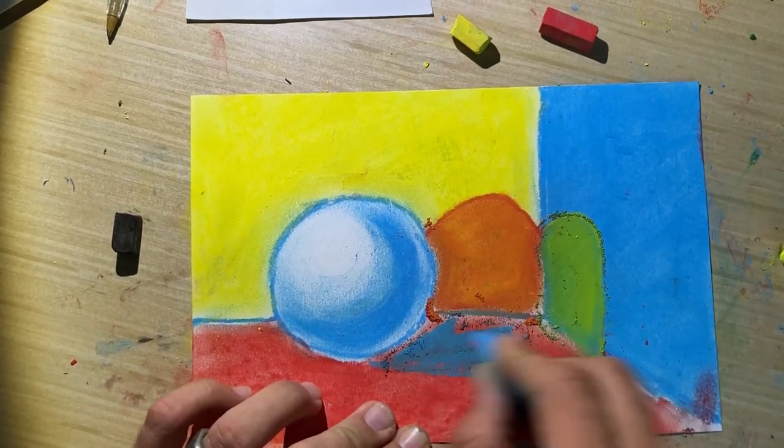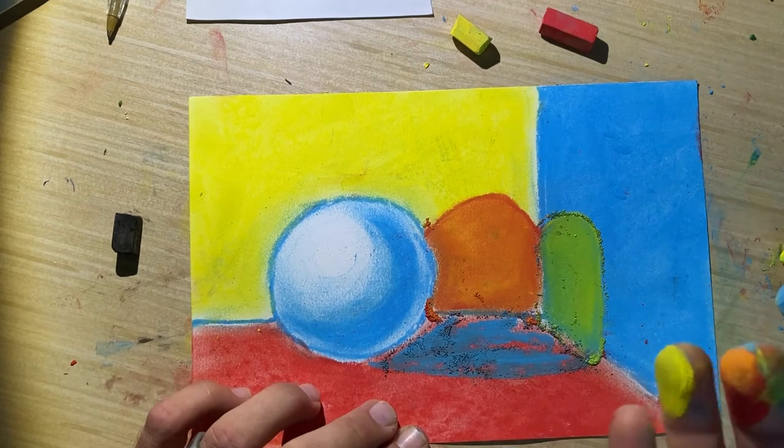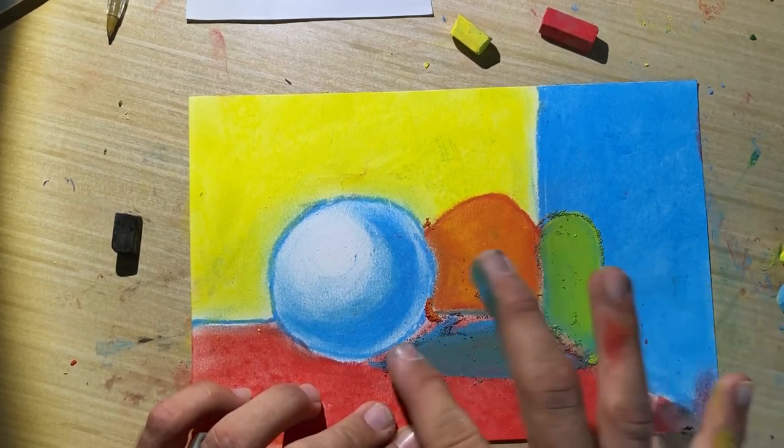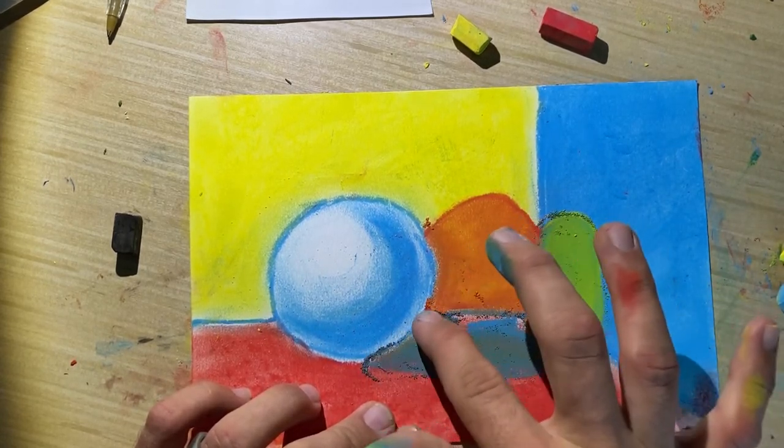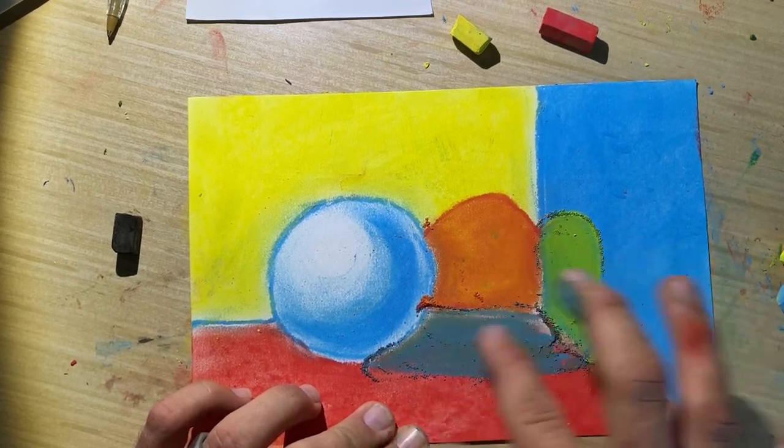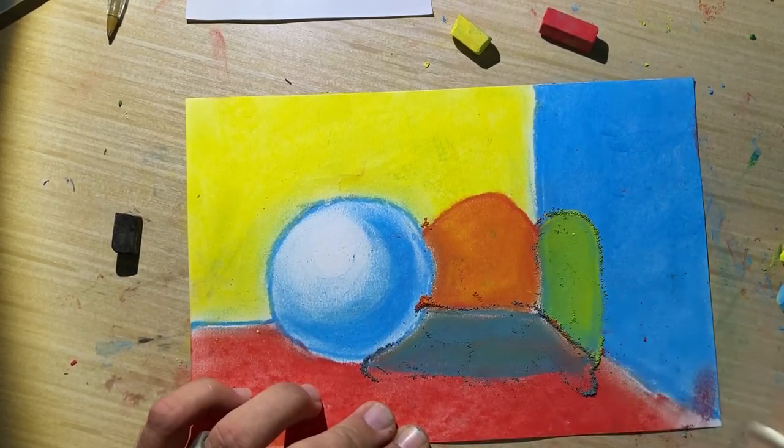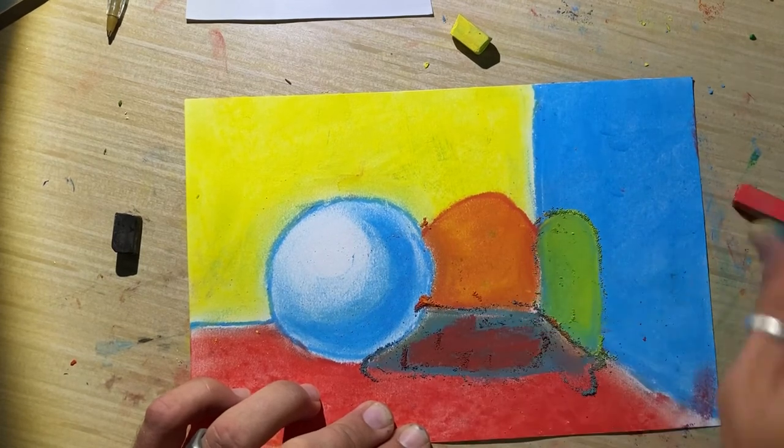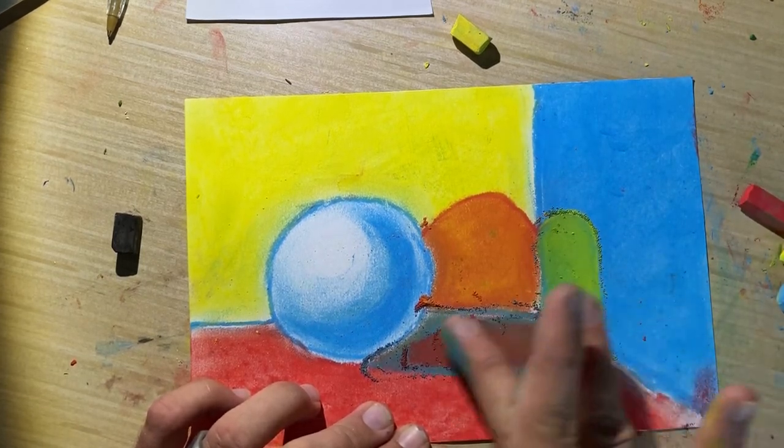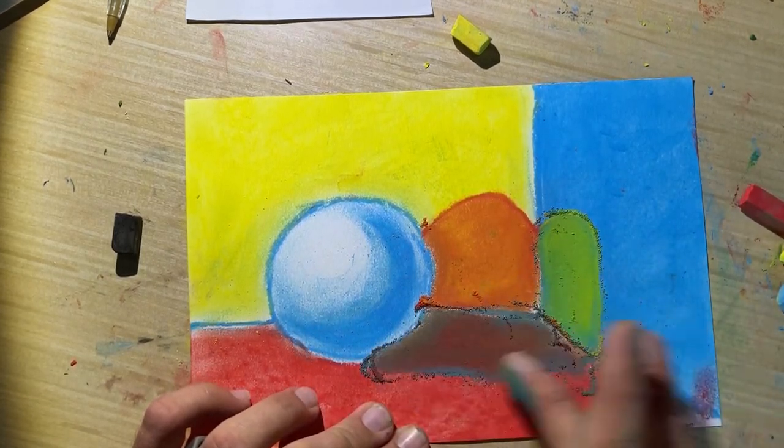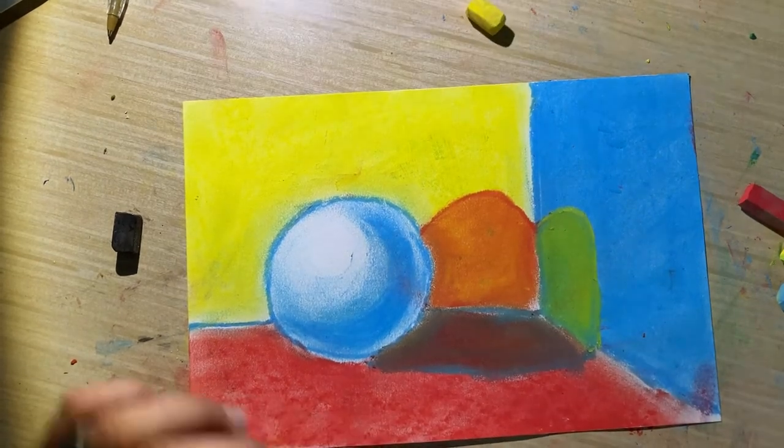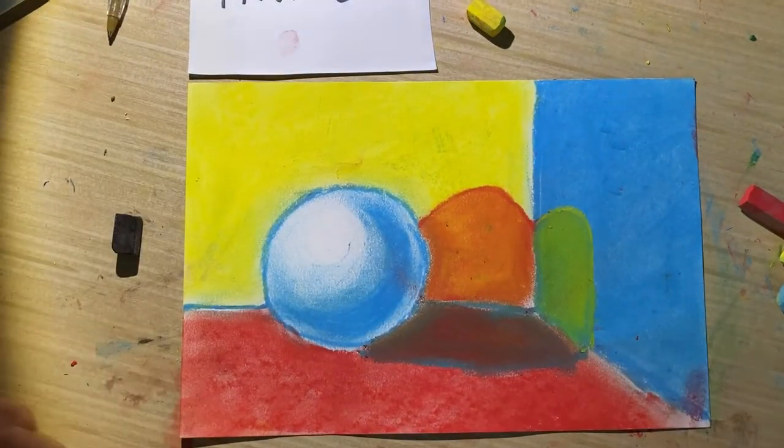And then down here on the red floor, I'm going to throw in my blue. It's going to end up a little brown because I got a little yellow on my finger. That's okay. I want this to be a little more purpley. So to get that effect, I'm going to add a little more red down there. So there you have your shaded sphere with a cast shadow.